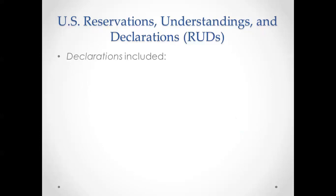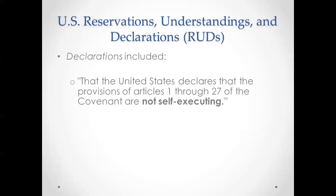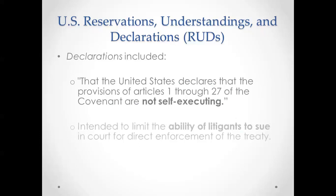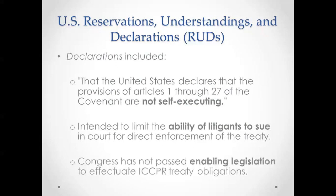The declarations included the United States declaring that the provisions of Articles 1 through 27 — all the substantive articles covering different rights — are not self-executing. This means they are not automatically enforceable in a court of law; enabling legislation is required to effectuate ICCPR treaty obligations. That means we cannot go to court and seek a direct remedy for an ICCPR violation, even though ratified treaties are part of the supremacy laws of the US Constitution.